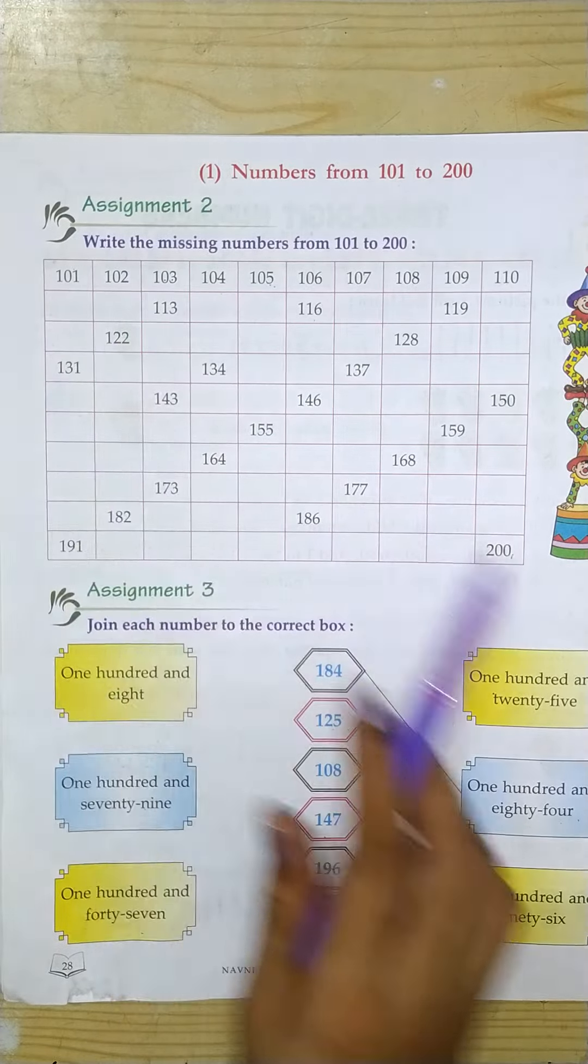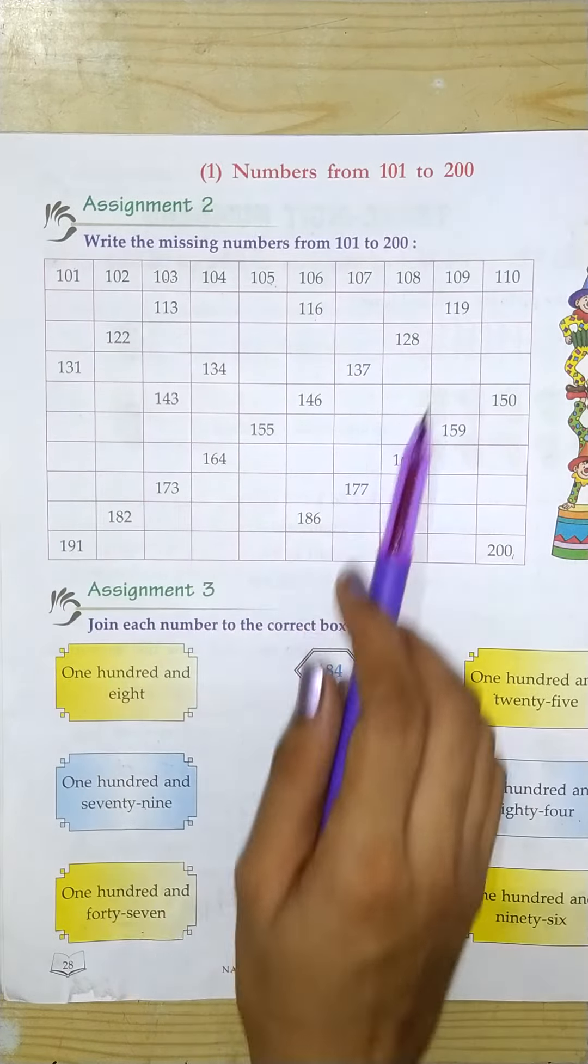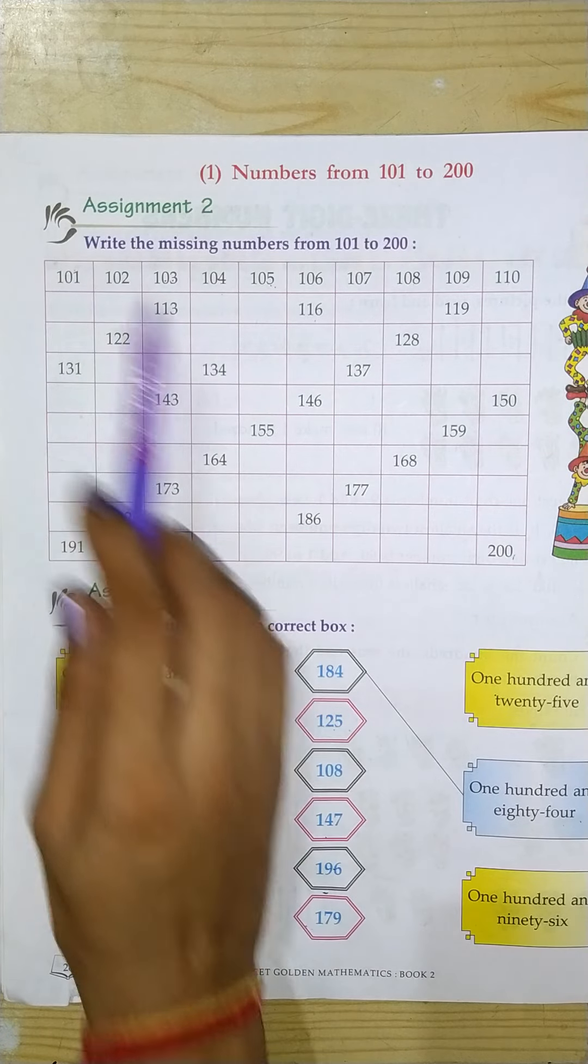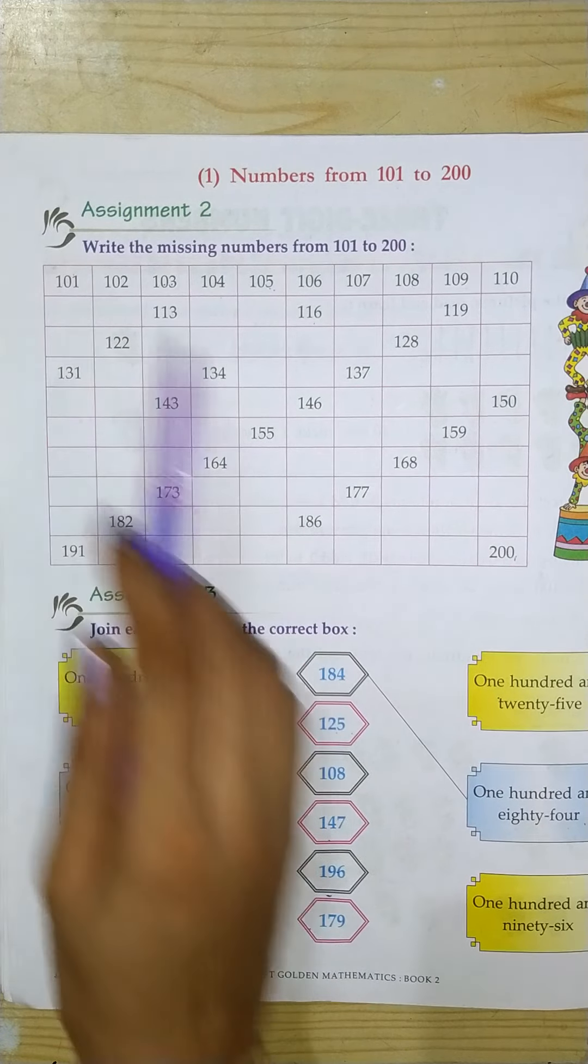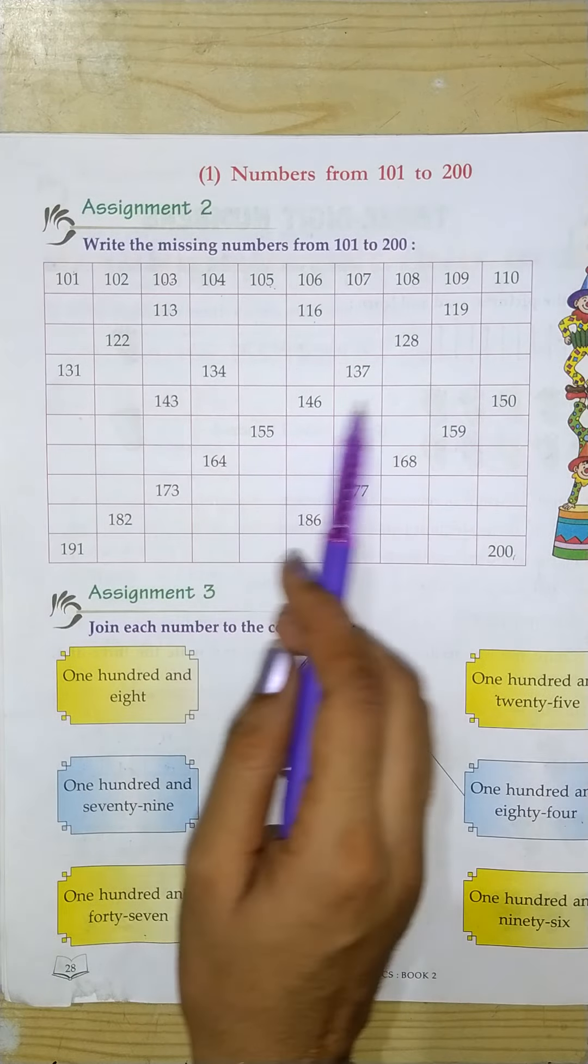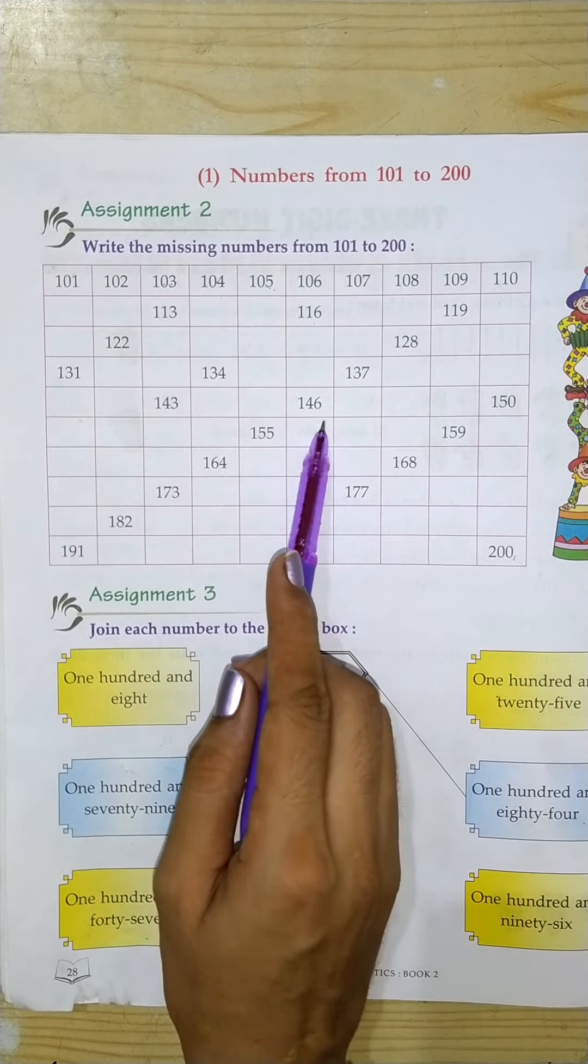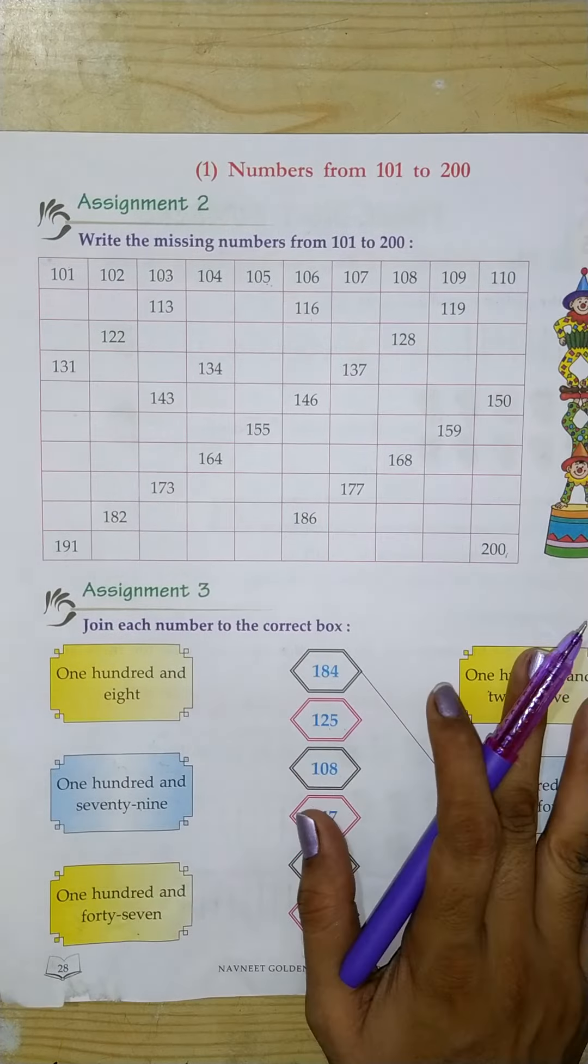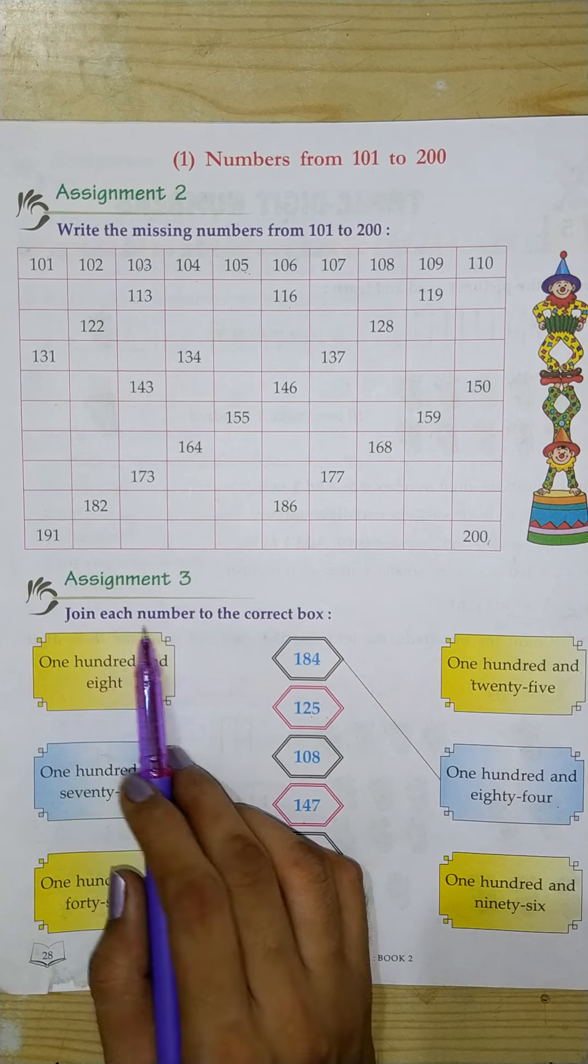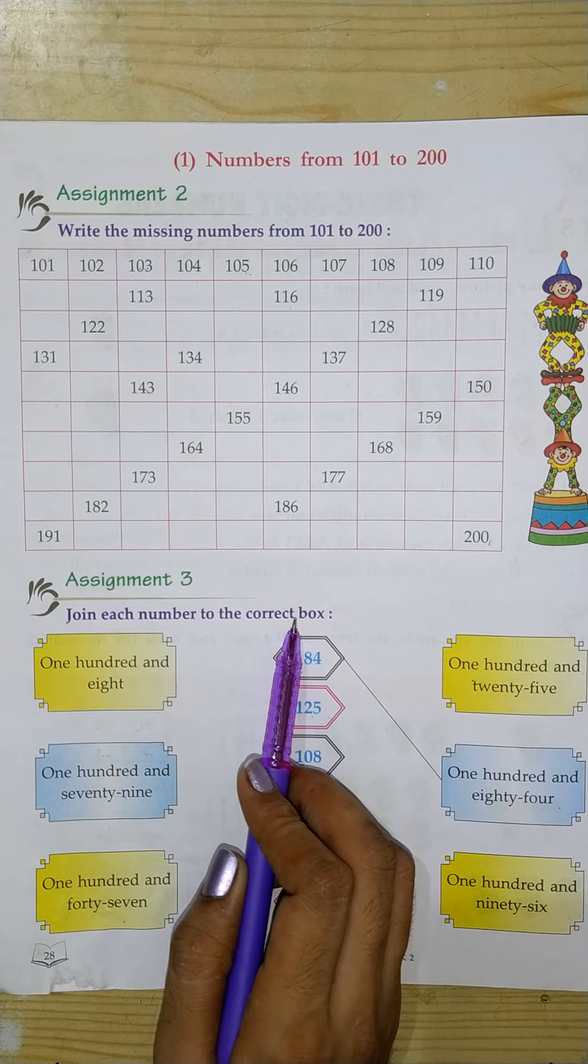We will write the missing numbers from 101 to 200. Next, we will do assignment 3. We will join each number to the correct box.